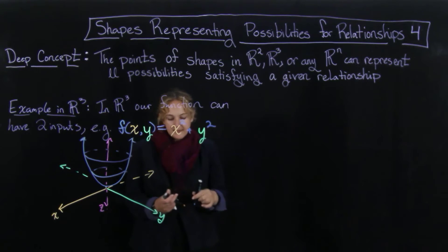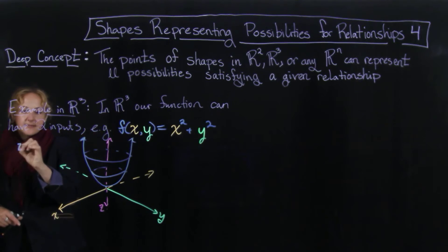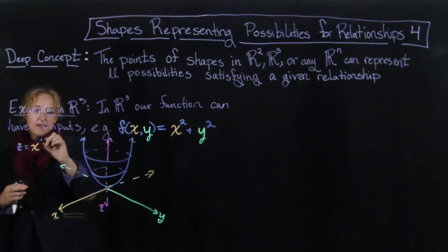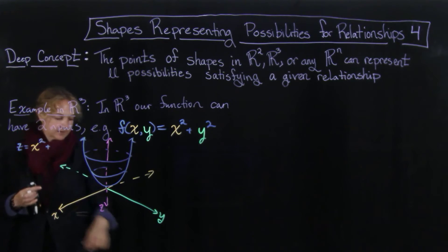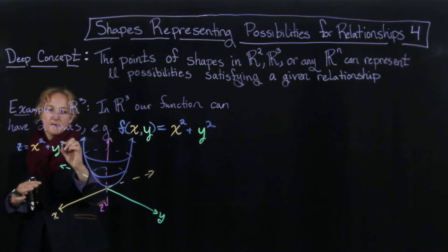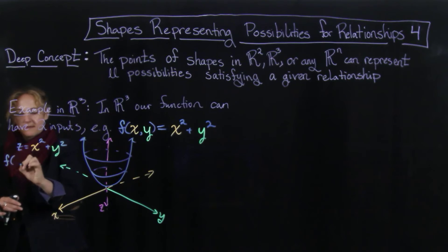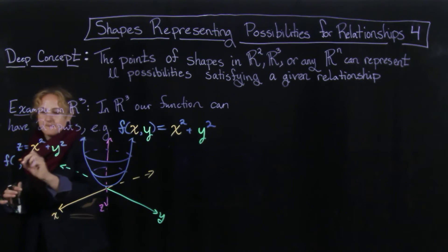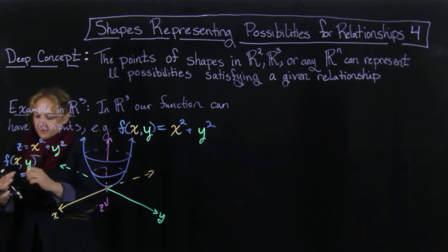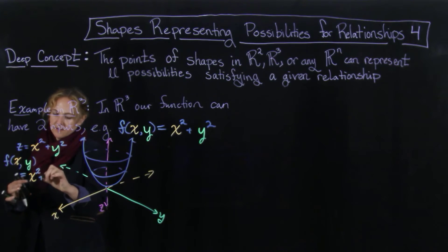So this is the graph where we have z equals x squared plus y squared. Or another way to think of this is that f of xy is going to equal x squared plus y squared.